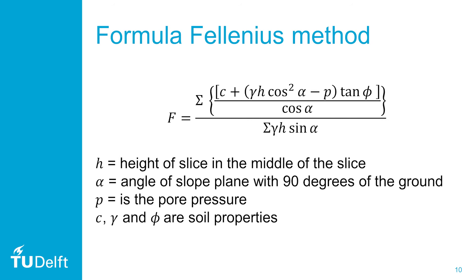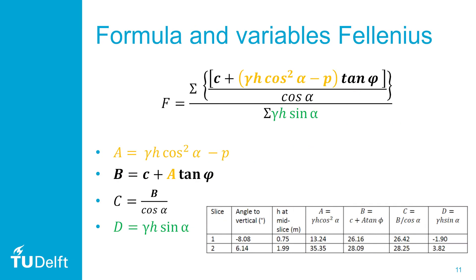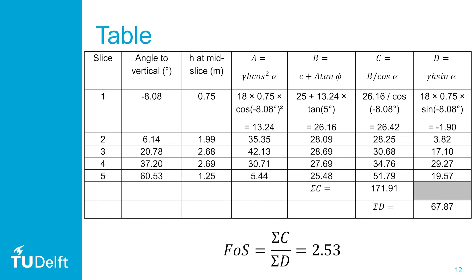Let's have a closer look at the method itself. We can split the method up into convenient parts to make keeping track of it easier. We need to calculate these values for each slice and then sum the total numerator and denominator. When filling in the variables for each slice, it's easy to make a table to keep the overview. The header of such a table is shown. In this table, you can keep track of the outcomes for the different variables which are shown on the slide.